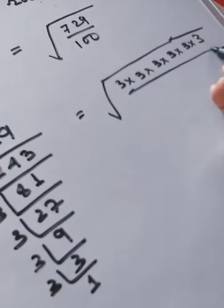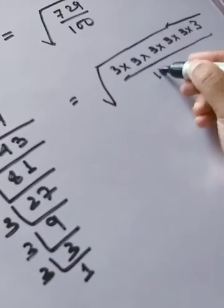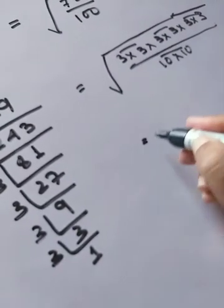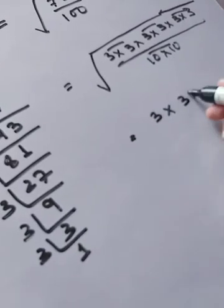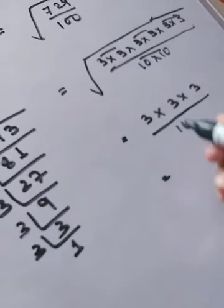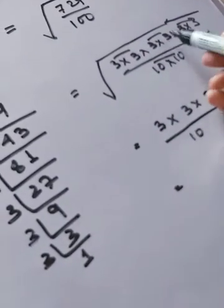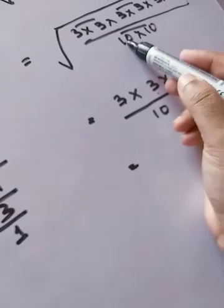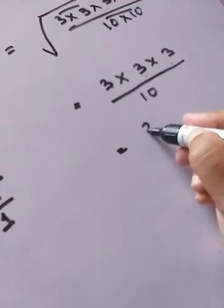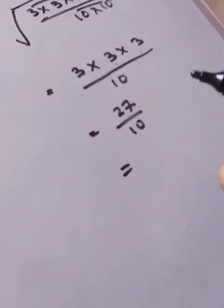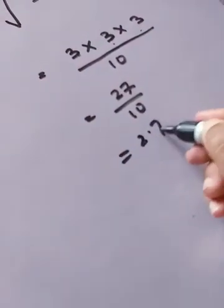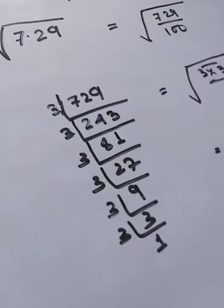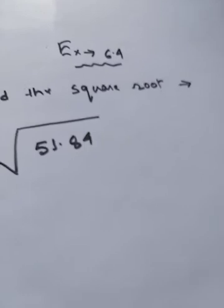For 100, we write 10 × 10. Now pair up all the digits. For each pair of 3s, one 3 comes out — three 3s come out in total. For the denominator, one 10 comes out per pair. So we get 3 × 3 × 3 = 27, divided by 10, which is 2.7. The square root of 7.29 is 2.7.